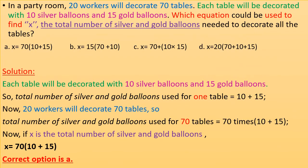In a party room, 20 workers will decorate 70 tables. Each table will be decorated with 10 silver balloons and 15 gold balloons. Which equation could be used to find x, the total number of silver and gold balloons needed to decorate all the tables? Total balloons per table is 10 plus 15, so for 70 tables: x equals 70 times (10 plus 15). The correct option is A.